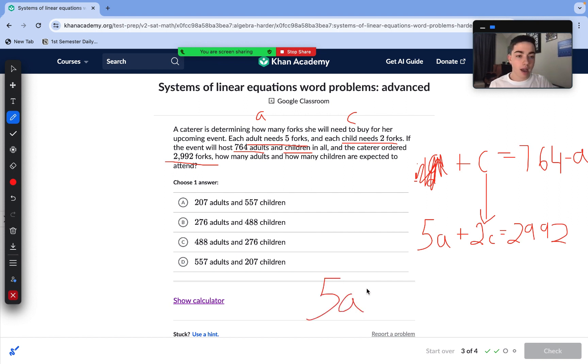Which is perfect for substituting into our second equation, our forks equation. So we are left with 5A plus 2 times (764 minus A) equals 2,992. Let's start with distributive property. 2 times 764 is 1,528, 2 times negative A is negative 2A. So now we have 5A plus 1,528 minus 2A equals 2,992. Let's combine like terms. 5A minus 2A is 3A.